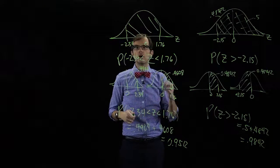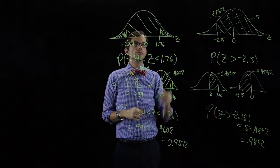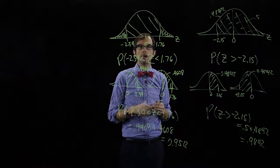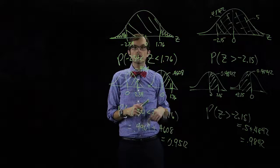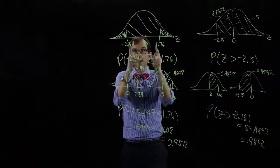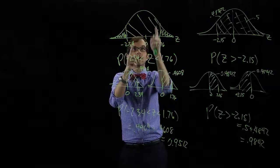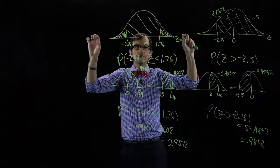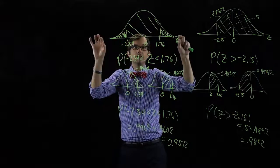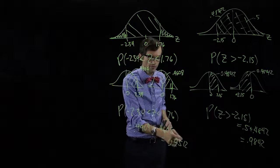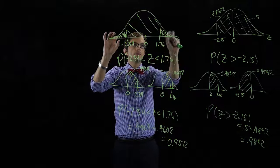Let's say we wanted to know the area in the two outer tails — how can we do something like that? We know that the entire area under the curve is one, and if we have the area in between, then the complement of this area is everything else. The complement of this area gives us these two tails combined.